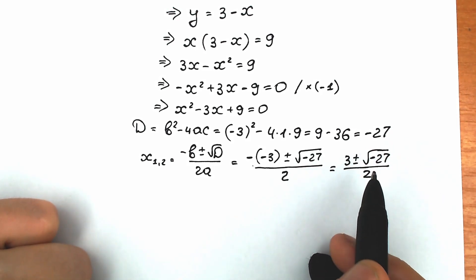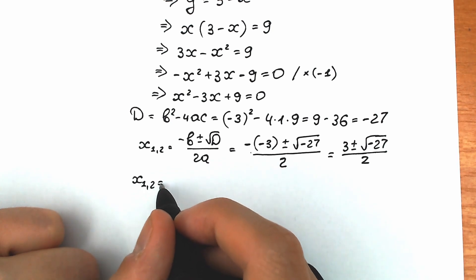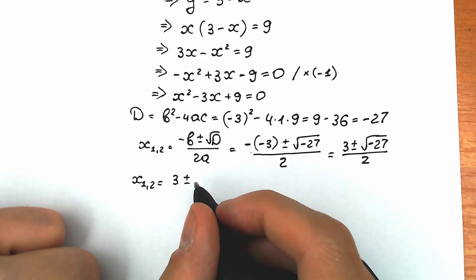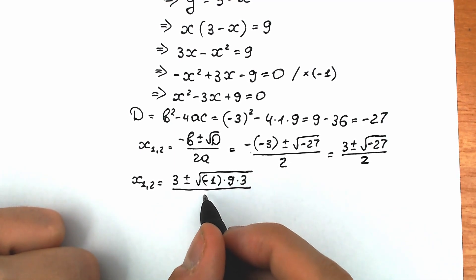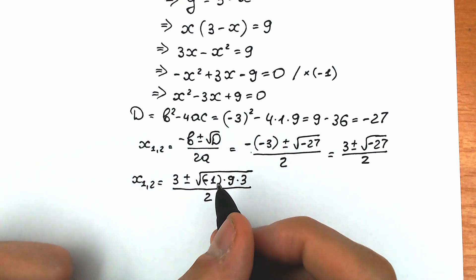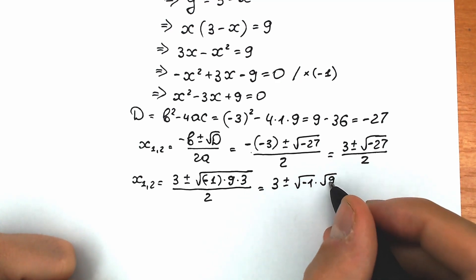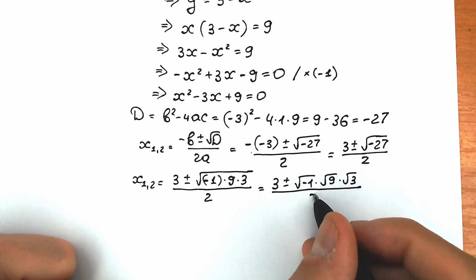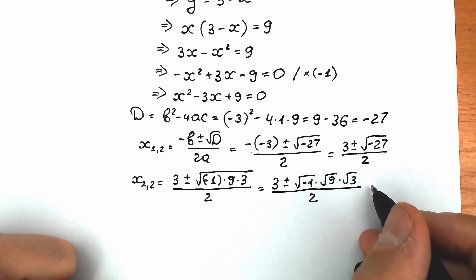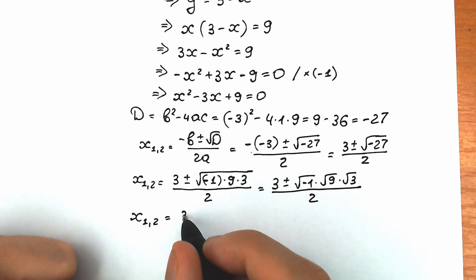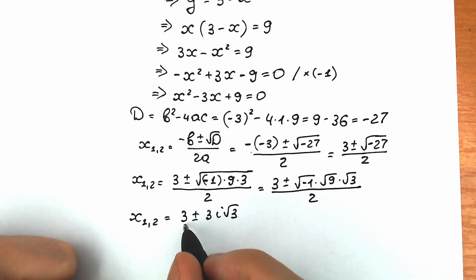Right now we can simplify the square root of minus 27 in terms of complex numbers. Let's write minus 27 as minus 1 times 9 times 3. So we can write the square root as square root of minus 1, times square root of 9, times square root of 3. Square root of 9 equals 3, square root of minus 1 is our complex unit i, and square root of 3 we leave as is. So x₁ and x₂ equal 3 plus or minus 3i square root of 3, all over 2.